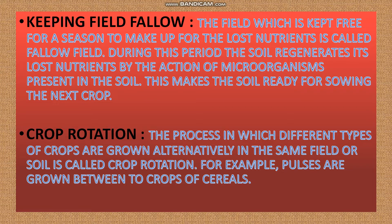Number one: Keeping field fallow. The field which is kept free for a season to make up for lost nutrients is called a fallow field. That means when soil fertility decreases, we leave that soil for a free season.